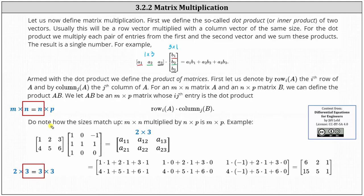Let's look at an example. Below we have a two by three matrix times a three by three matrix. We first want to make sure the product is defined. Because three equals three, the product is defined, and the outer dimensions of two by three give us the dimensions of the product. To find the entry in row one, column one of the product, we find the dot product of row one in the first matrix and column one in the second matrix. This gives us one times one plus two times one plus three times one. Simplifying, the entry in row one, column one of the product is equal to six.